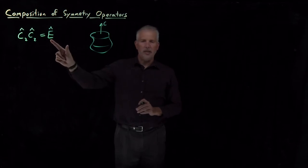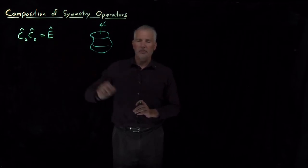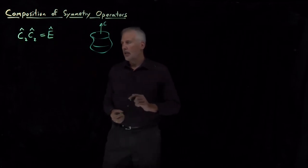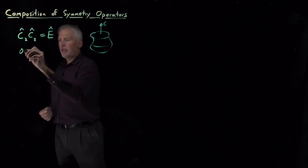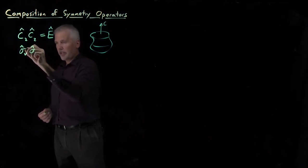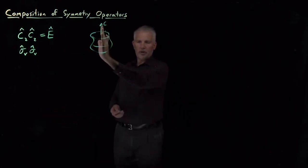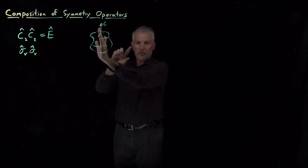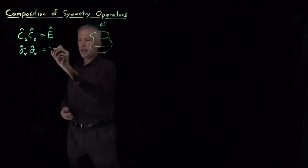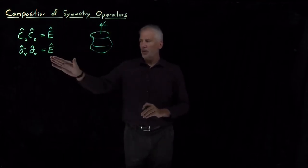This begins to show why we need the identity operator in our list of symmetry operators — so we can understand when nothing has been performed on an object. Likewise, if we do a reflection followed by a second reflection, reflecting the object in a mirror and then reflecting it back, we get back the same object we started with, which is the same as doing nothing.